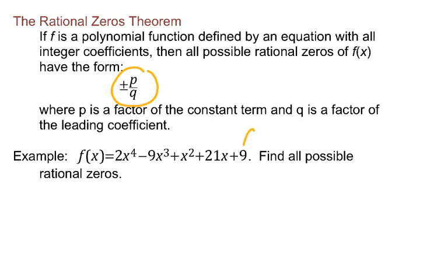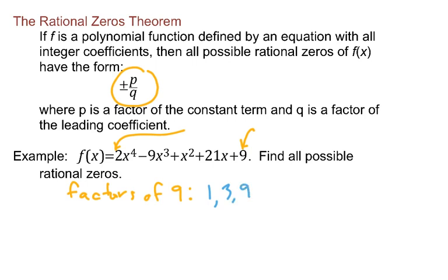The constant term would be, for example, in this polynomial, the 9 — just the number that doesn't have a variable. And for the leading coefficient, the assumption is that all the terms are written in decreasing order of exponent, which is true of this example, and the leading coefficient is the coefficient of the first term. The theorem gives me a list of what the rational zeros might be — the possible rational zeros. You first have to look at the constant term and think about what are its factors. The factors of 9 — all the numbers that divide into 9 without remainder — are 1, 3, and 9.